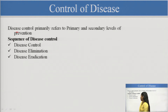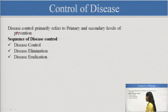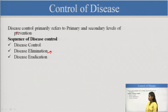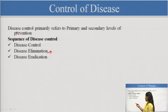The first sequence is disease control. Then we will eliminate the disease. Elimination generally means we are eliminating a disease from a particular area — it is a geographical term. Then, eliminating the disease from the whole world is called eradication.